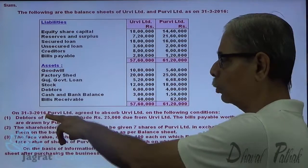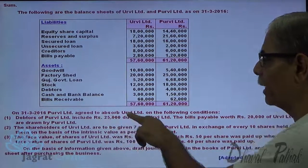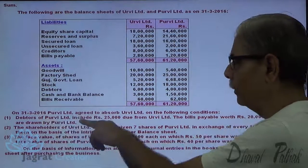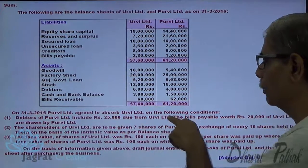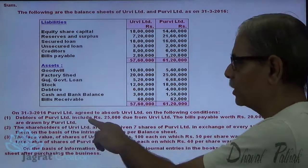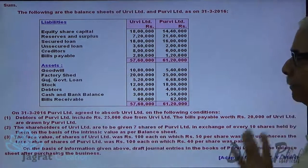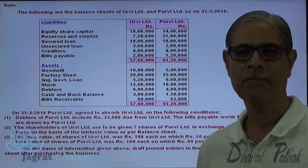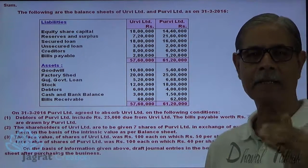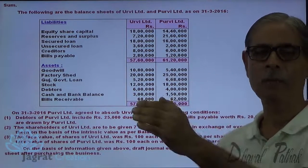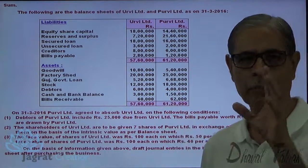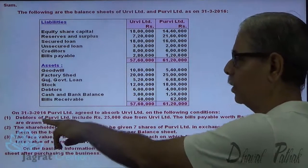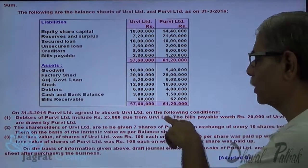On 31st of August 2016, Purvi Limited agreed to absorb Urvi Limited on the following conditions. Debtors of Purvi Limited include 25,000 due from Urvi Limited. So debtors of Purvi are the creditors of Urvi — creditors of Purvi and creditors of Urvi will be merging, and these debtors of Purvi include 25,000 due from Urvi.